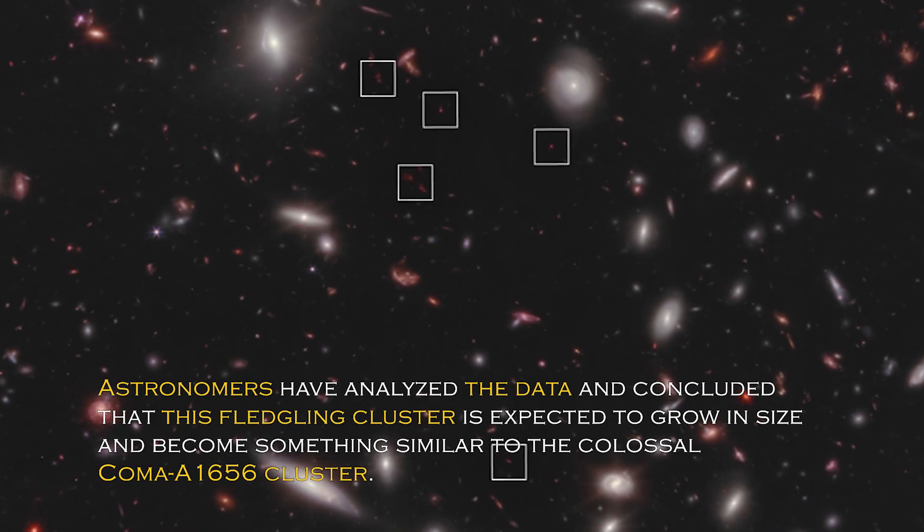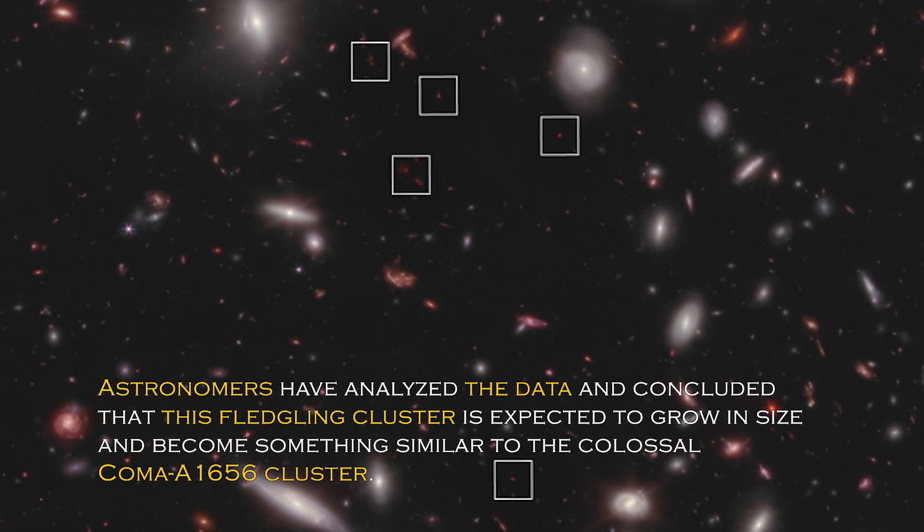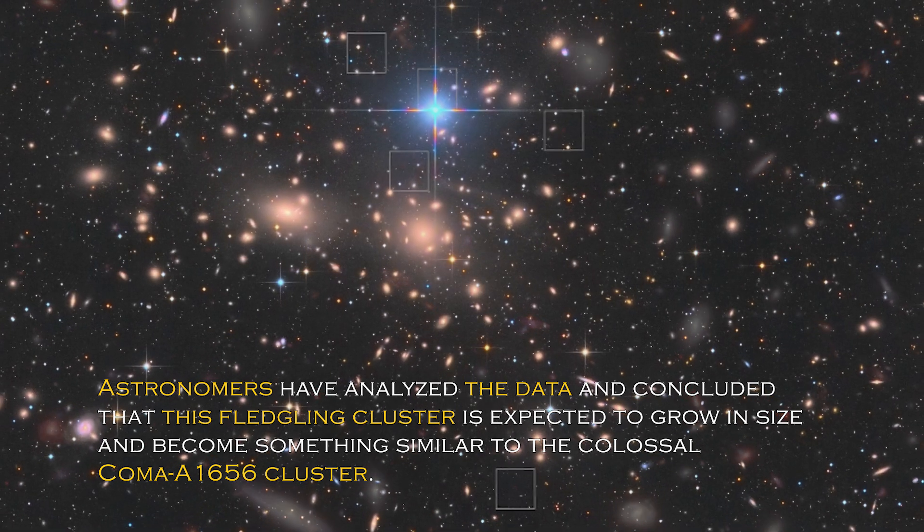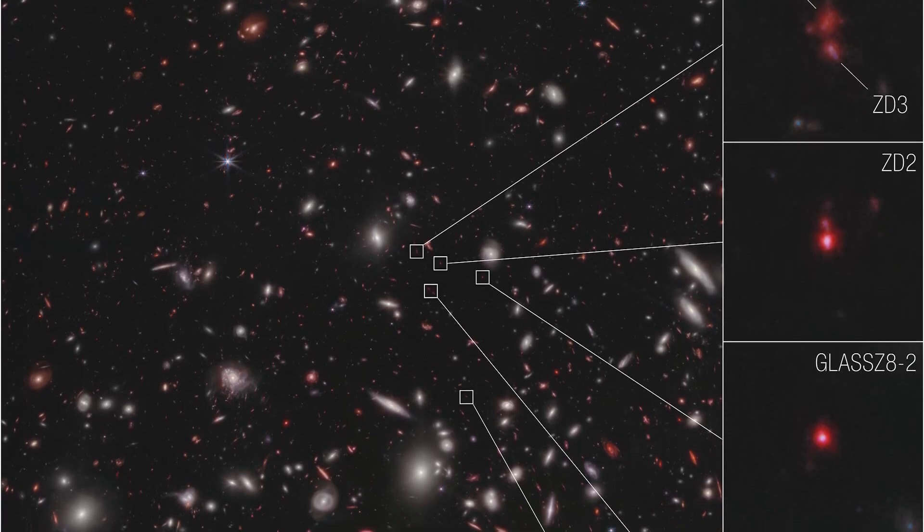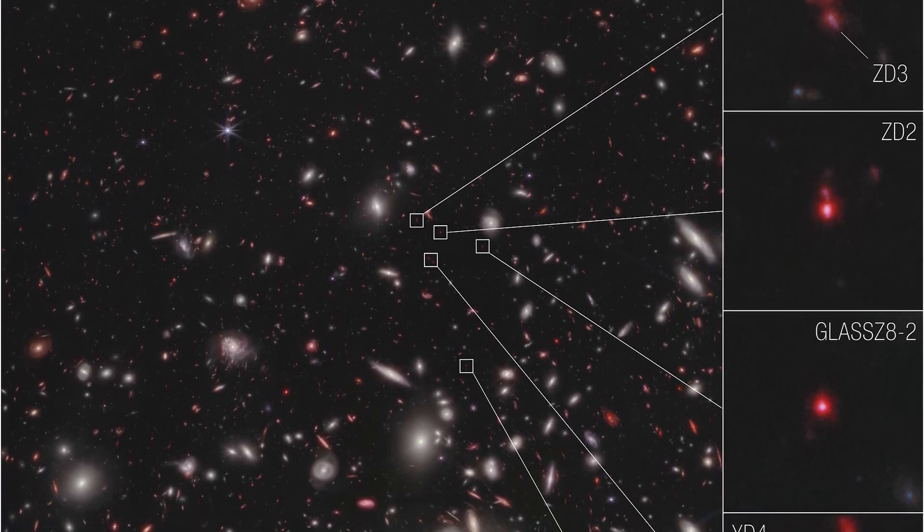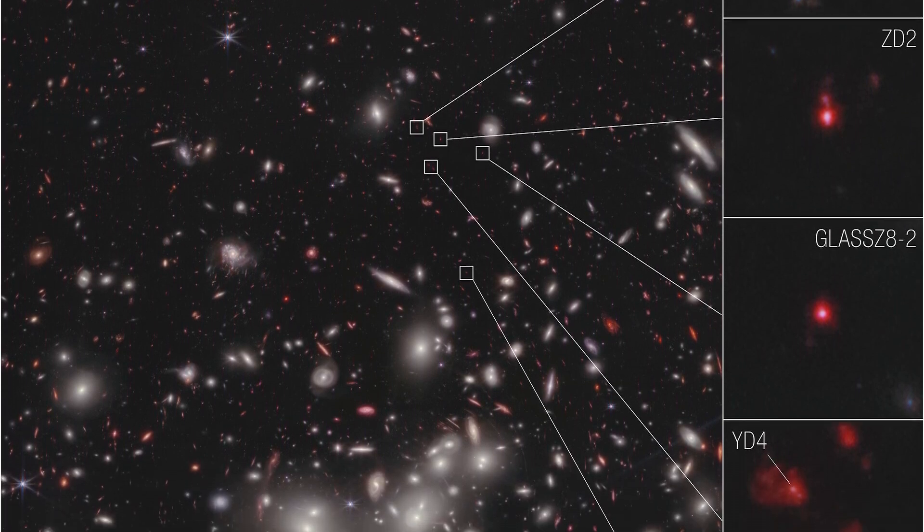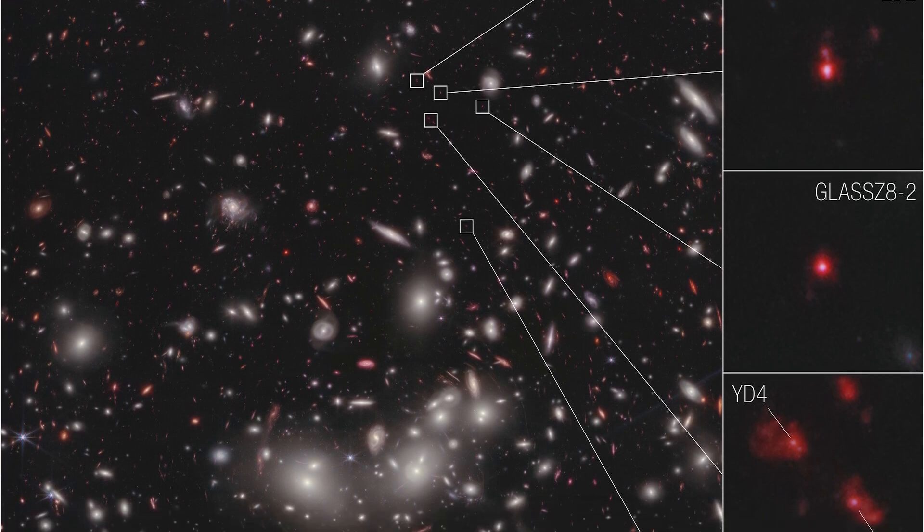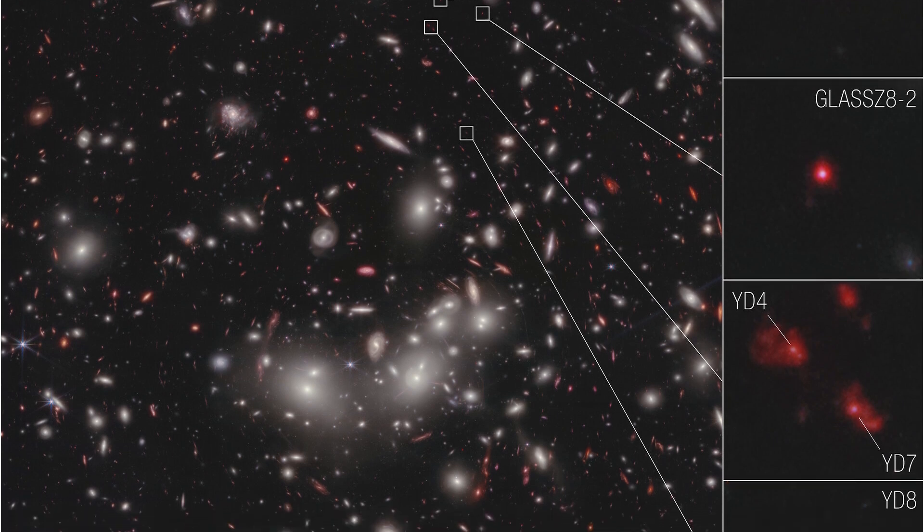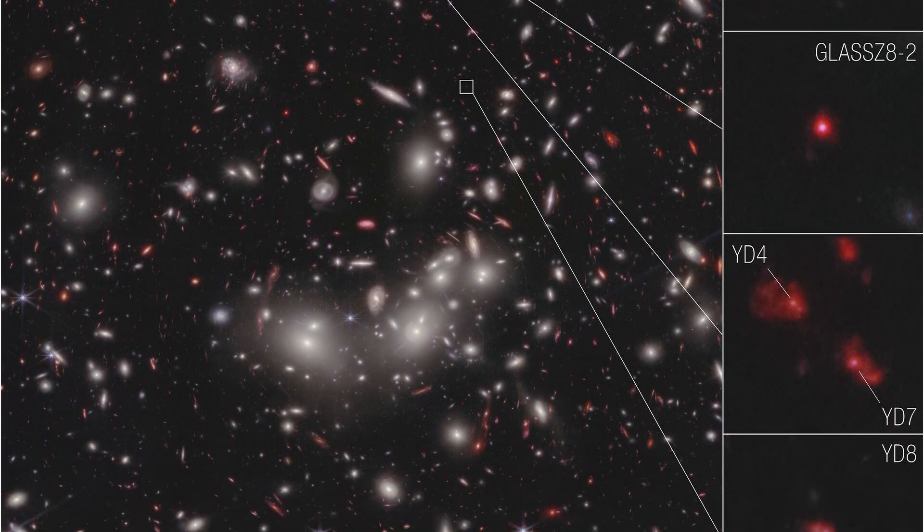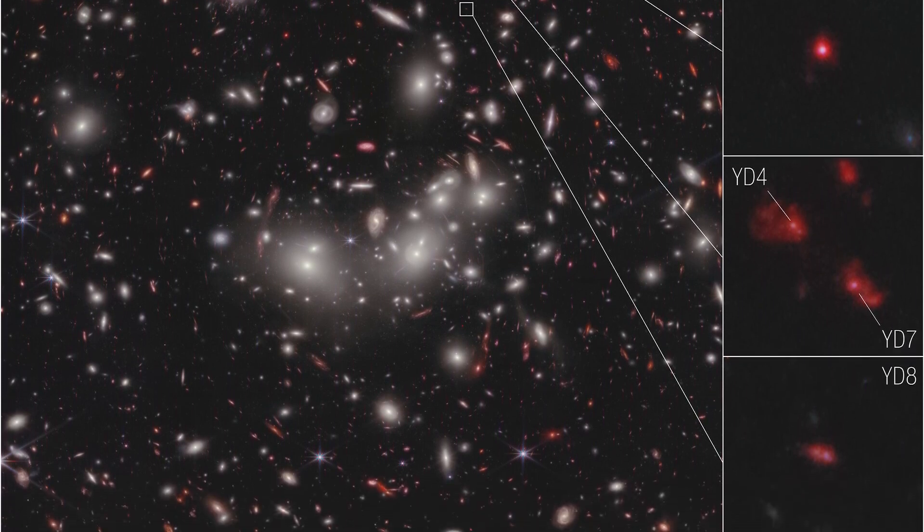Astronomers have analyzed the data and concluded that this fledgling cluster is expected to grow in size and become something similar to the colossal Coma A1656 cluster. The place where all this is taking place is unique and special, as it is in an area of accelerating galactic evolution thanks to the James Webb Space Telescope. Now researchers can measure the velocities of these seven galaxies, which gives them the confidence to confirm that they are bounded together in a protocluster. To put this in perspective, NASA scientists compared these distant galaxies to small drops of water in different rivers that will eventually join together to form a large, powerful river.